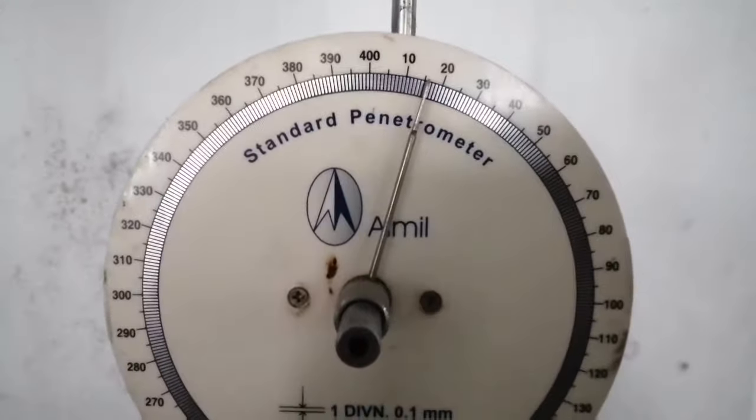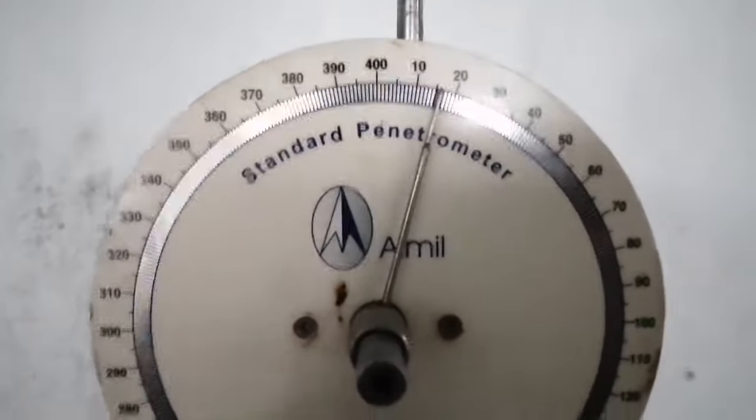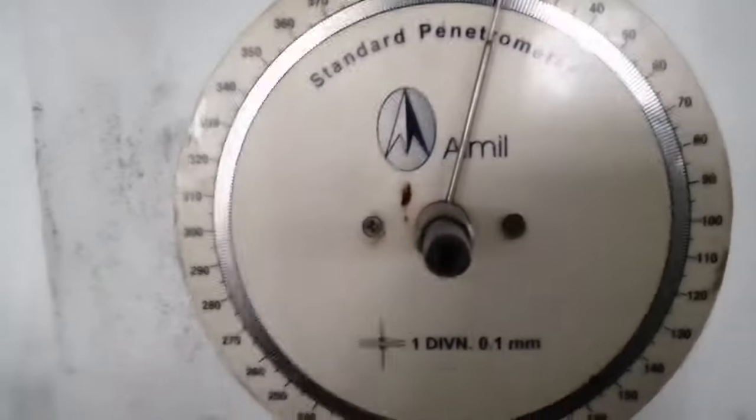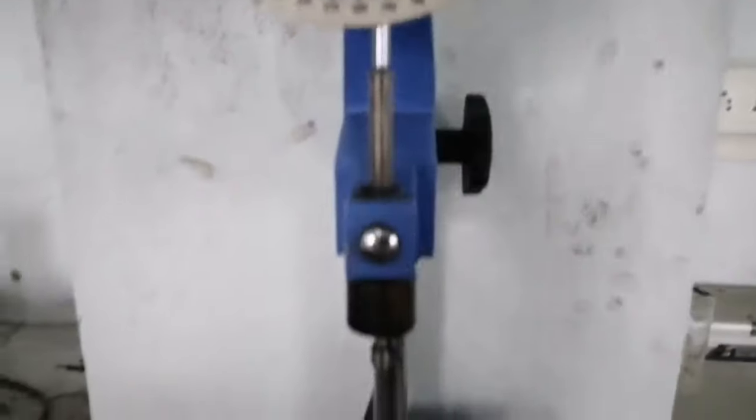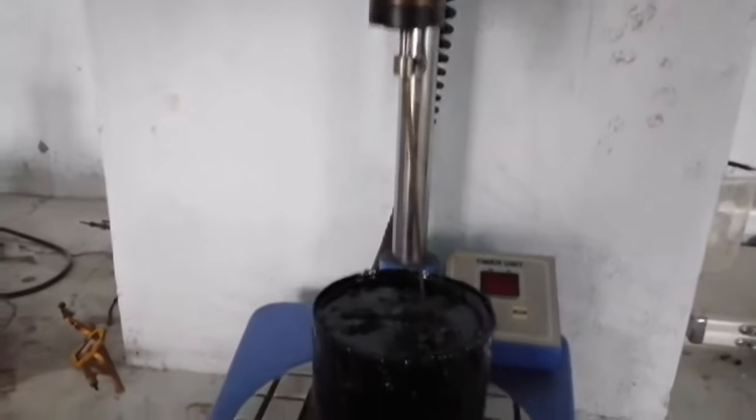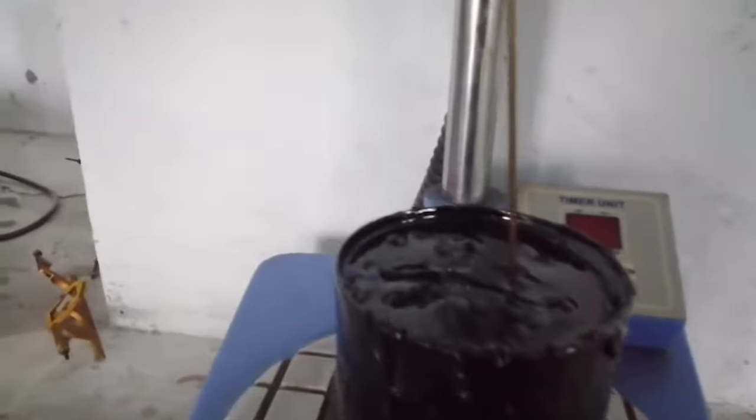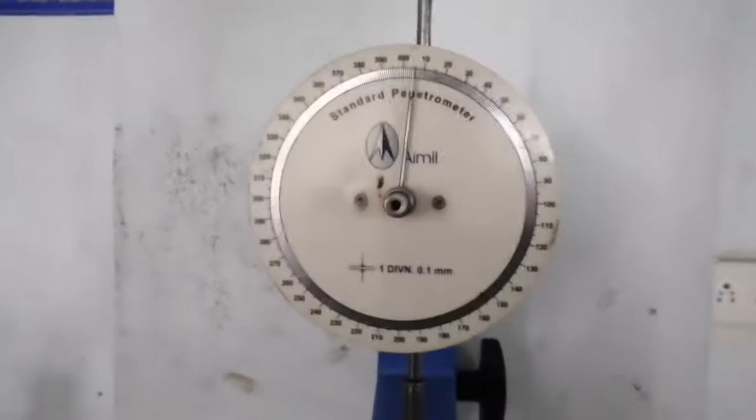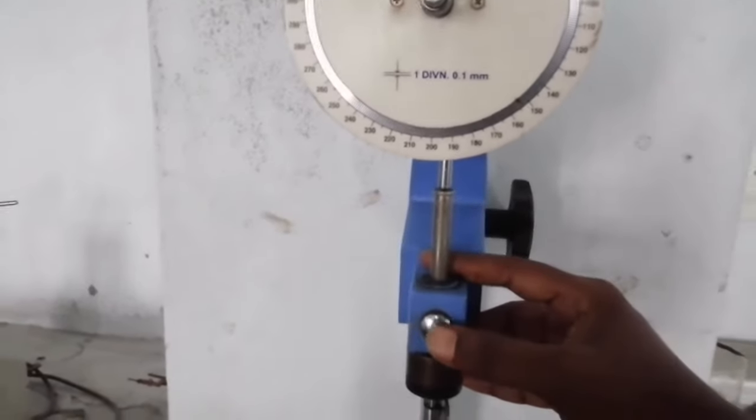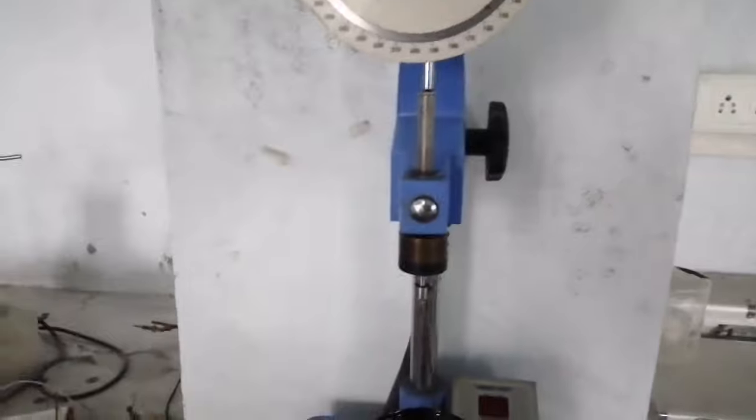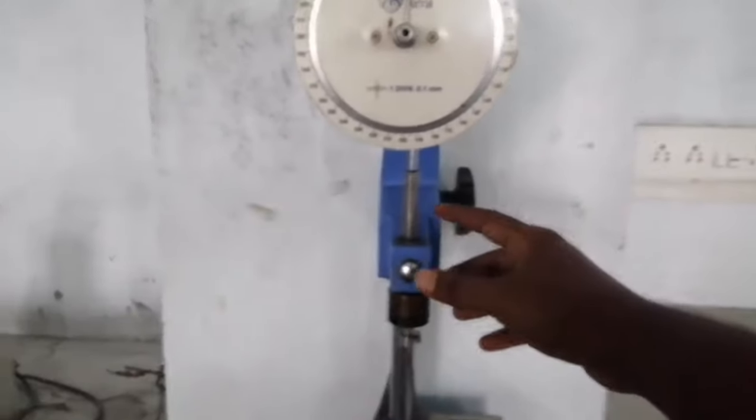Here we can see the reading is between 10 to 20. You can adjust here and make it to 0. Next we have a setup with needle and make sure that it just touches the point. Let us allow it to penetrate by clicking on this button which is shown. This is done manually now and we have to wait for 5 seconds to complete the experiment.